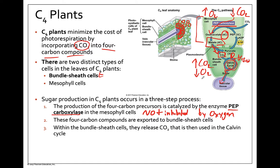The sugar gets sent to the veins to be moved to other parts of the plant. So C4 plants still do the Calvin cycle the way we learned it, but they add a step at the beginning using PEP carboxylase to grab carbon dioxide out of the atmosphere, fix it on a four-carbon molecule, release it again in a different location, and then fix it again onto a three-carbon molecule — just like the normal Calvin cycle.